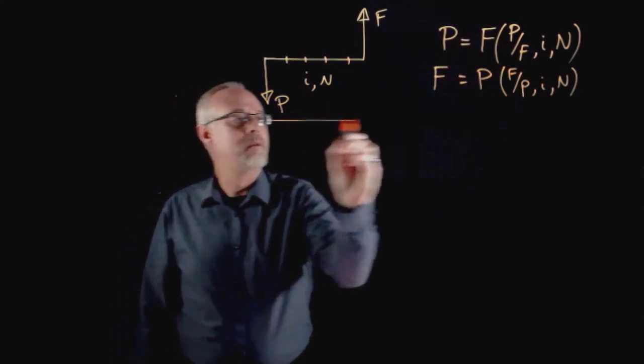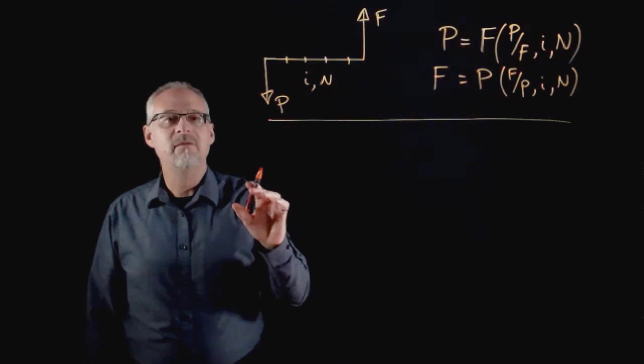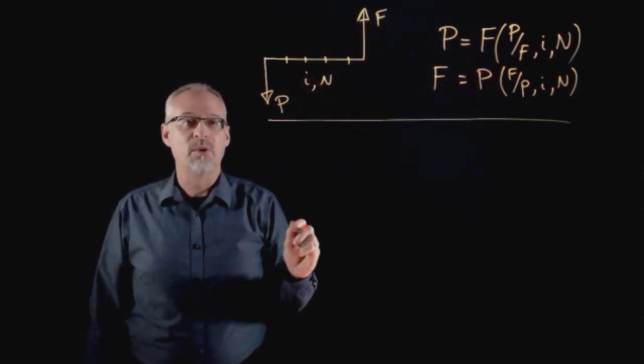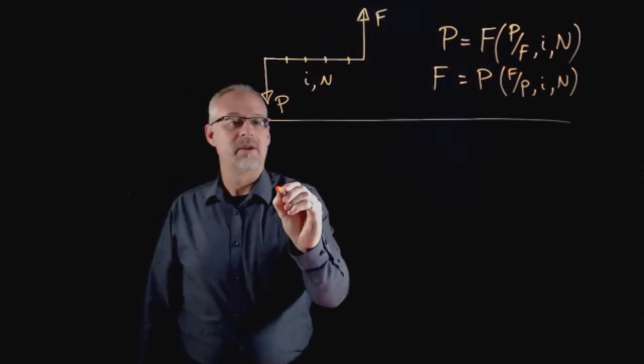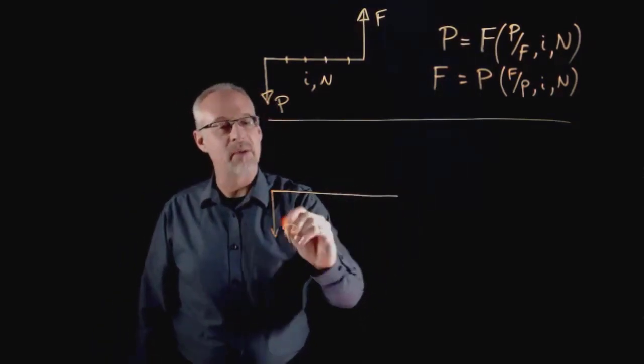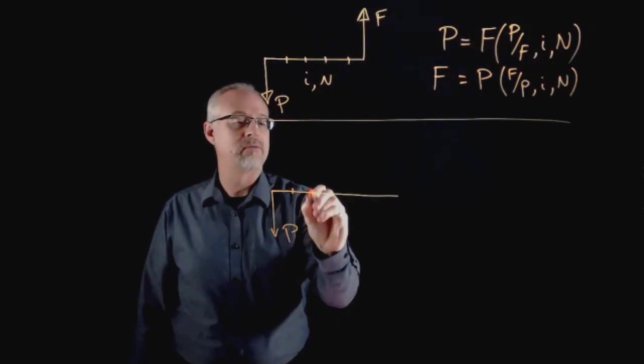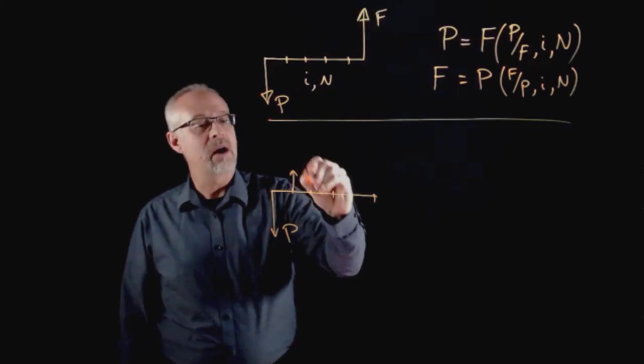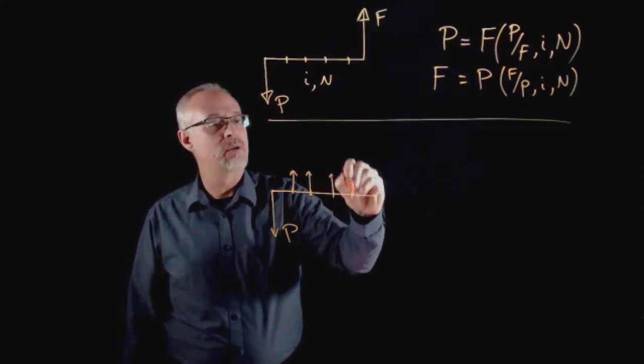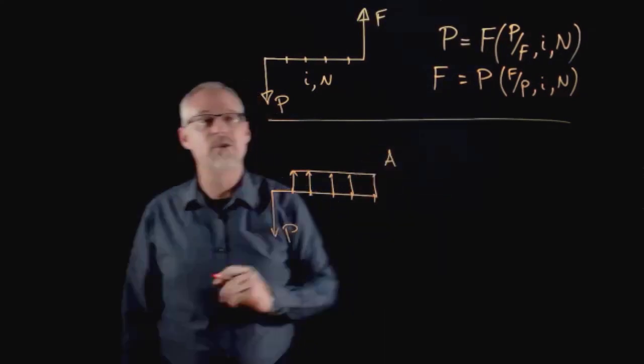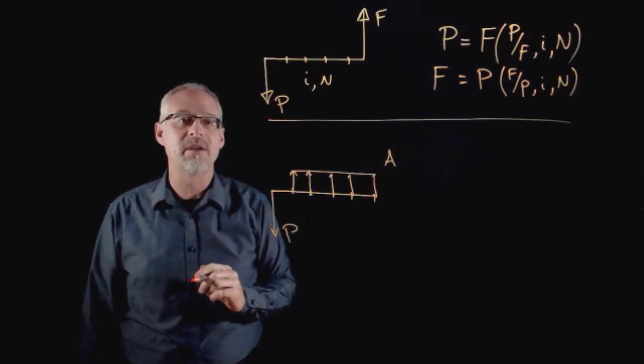Another rule is an annuity. We have again a P, and we have another cash flow diagram, but this time I have a repeating cash flow, and that repeating cash flow we refer to as an A or an annuity.